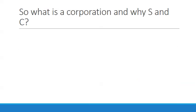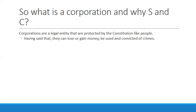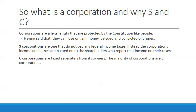So what is a corporation? Corporations are a legal entity protected by the Constitution, like people. The 14th Amendment gives protection not just to people but also to corporations — they are treated like individuals. They can gain or lose money, and they can also be sued and convicted of crimes. In S corporations, the company does not pay federal income taxes; instead, income and losses are passed to shareholders who report it on their personal income. Think of an S corporation like a sole proprietorship in terms of who actually pays taxes.